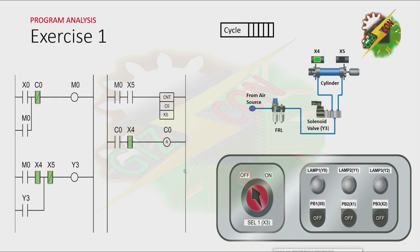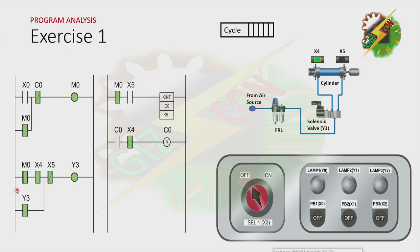This will be my answer to this problem. Let's press PB1. As you can see, when we press PB1, X0 is energized. That will cause M0 to turn on. M0 will not turn off even if X0 is off because there's a latching here. Then, because M0 is on and the cylinder is at the fully retracted position, Y3 will turn on. That will cause the solenoid to turn on, and it will cause the cylinder to extend.